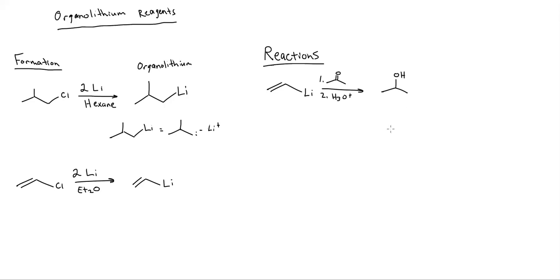The carbonyl group becomes an alcohol. And then whatever my organolithium is, I just add that on there. This organolithium is two carbons, so one, two — I'm done. That's it. So just like last time, ketones become tertiary alcohols.